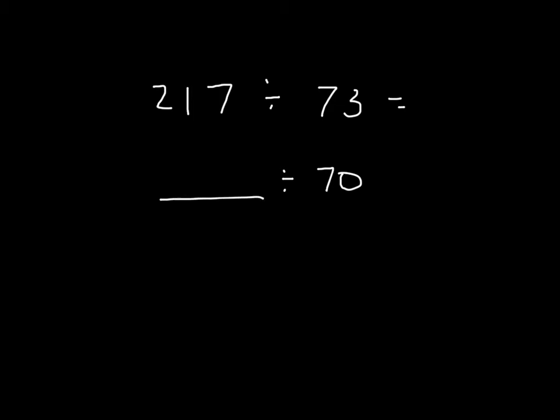So now we're thinking about a number that is easily divisible by 70 that is close to 217. Usually when we round, we round to the nearest place value, like for instance, 217 to the nearest place value for the tens place would be 220, or to the hundreds place would be 200. However, when we're estimating,